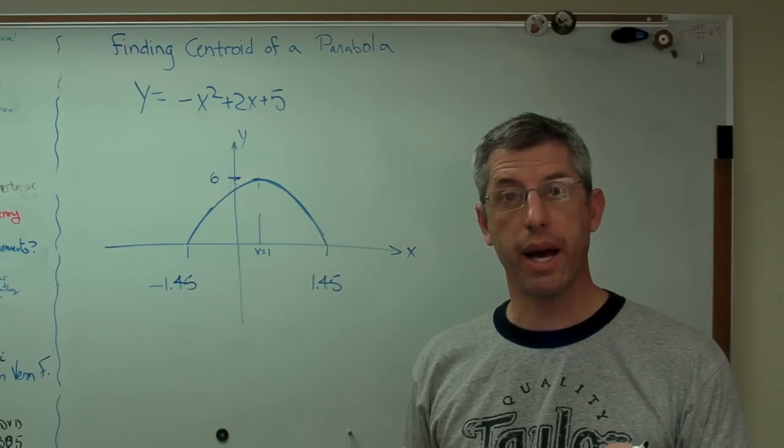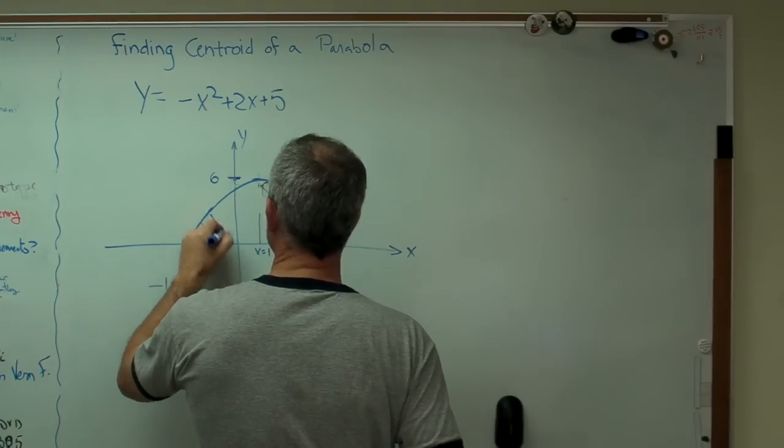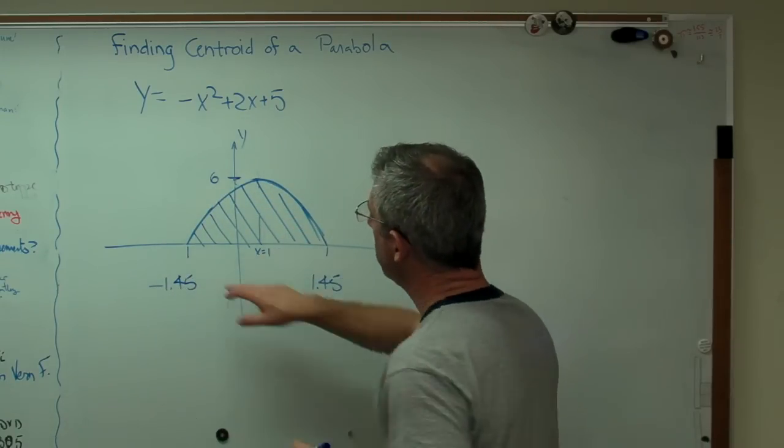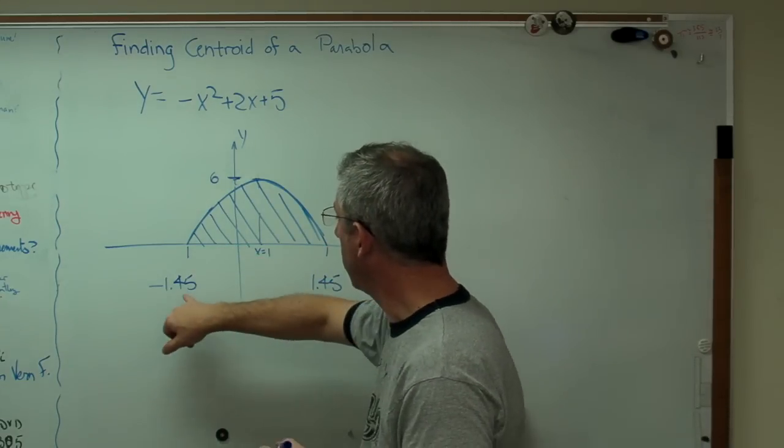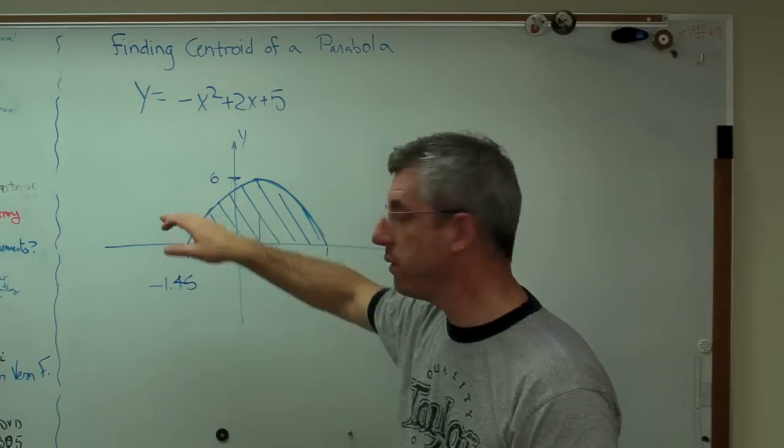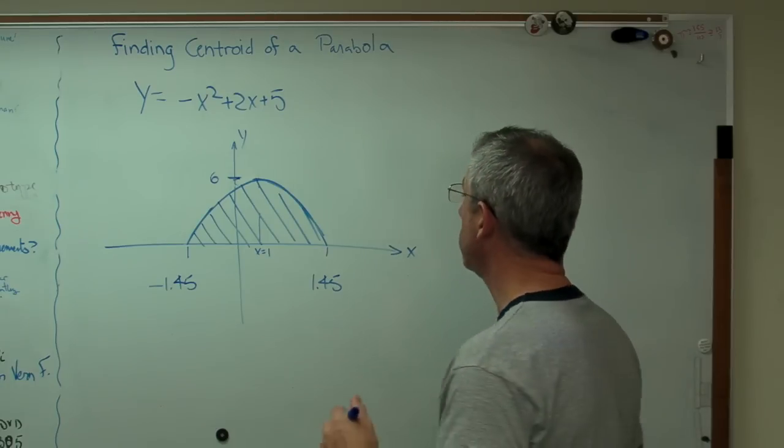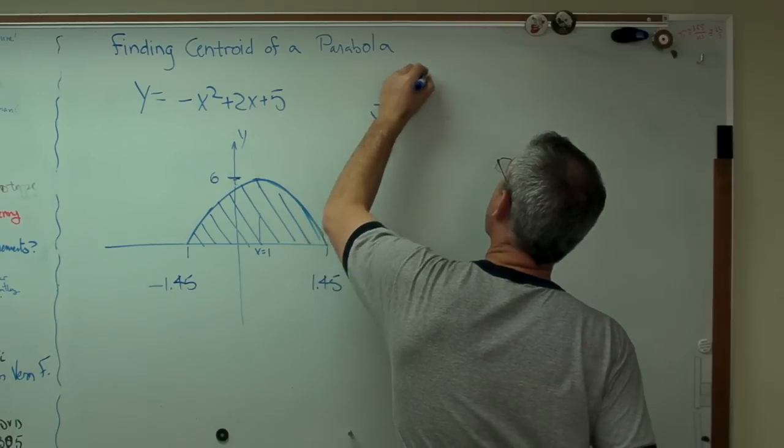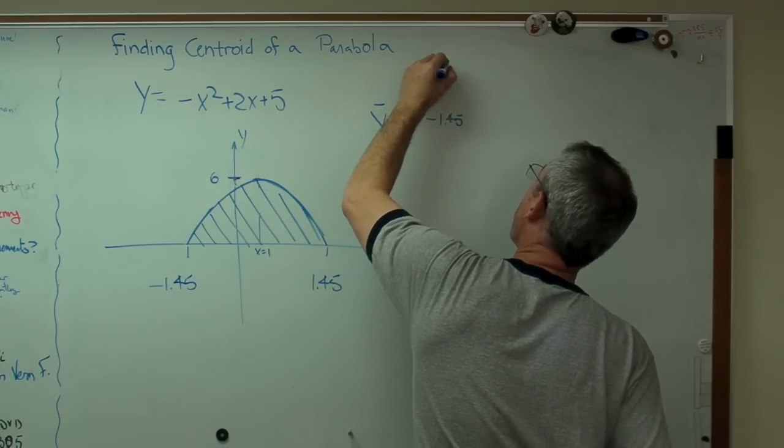Now, let's go through the exact same procedure. I want to find the centroid of this area. I'm assuming that I only want the area above the x-axis. And that the parabola with a height of 6 goes from minus 1.45 to 1.45. Let's just do the exact same thing now. Y bar equals, from minus 1.45 to 1.45.